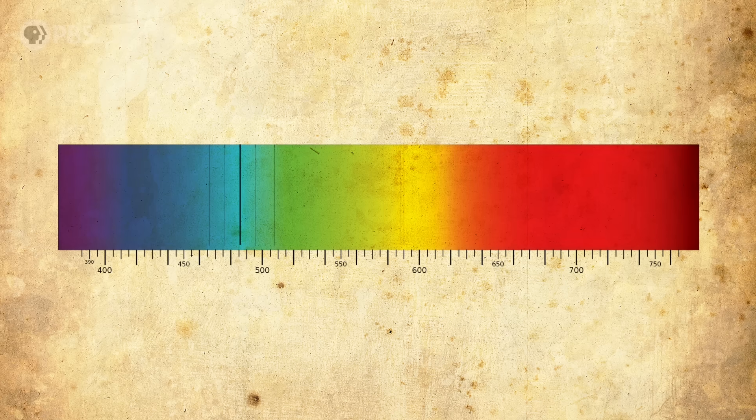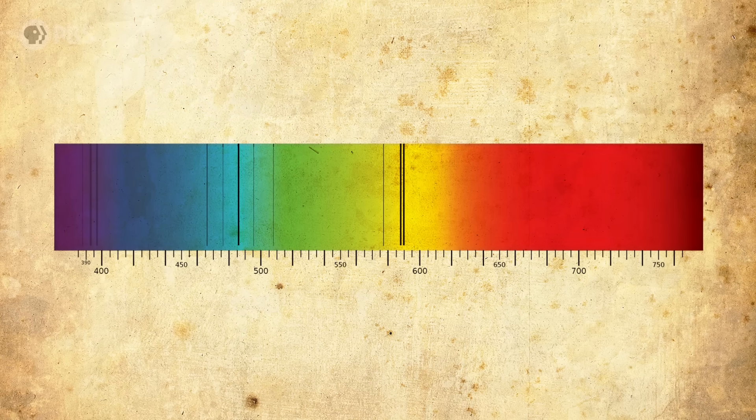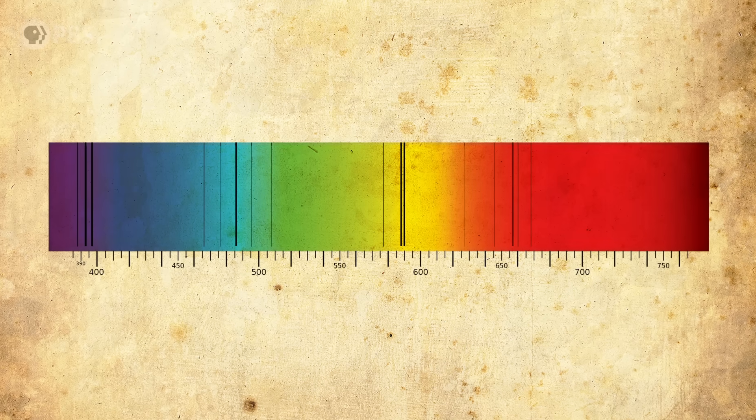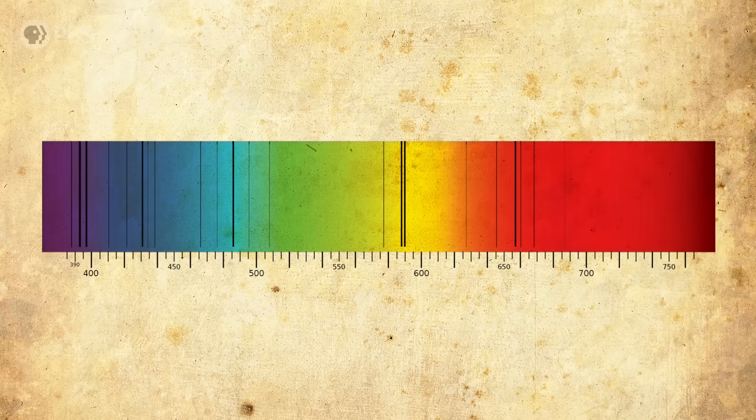He didn't know exactly why this happened, but concluded that Fraunhofer's black lines were caused by elements in the sun absorbing specific wavelengths. Together, Kirchhoff and Bunsen went on to show that many individual elements' spectral lines matched those missing lines in the sun's spectrum.